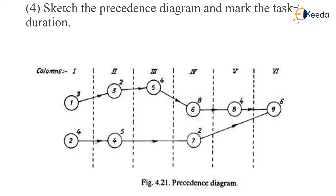Each of the time periods in the diagram is: 3 minutes, 2 minutes, 4 minutes, 8, 4, and 6 minutes, and 4, 5, 2 minutes. When we add all of them we get 38 minutes, which is our total time.